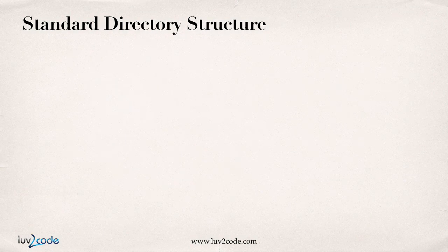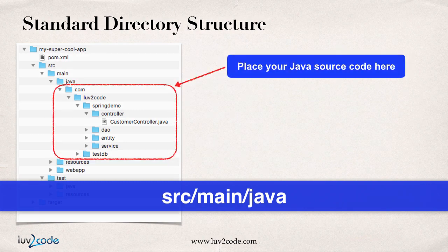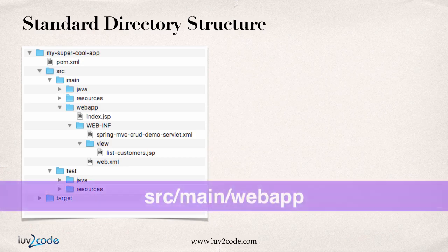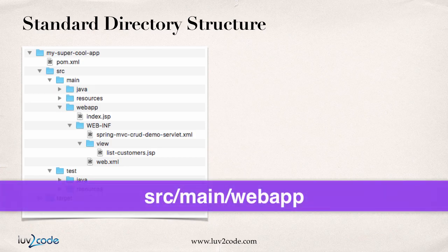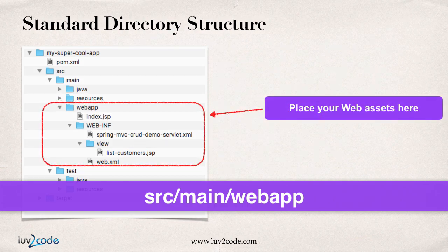Let's look at an example using some of our coding from before. We have our super cool app here, and our source code will be placed in source main Java. Under source main Java, you have your package structure and then your dot Java source files. If you're working on a web project, you place your web assets in the source main web app directory — your JSP files, configuration files, CSS, images, and so on.